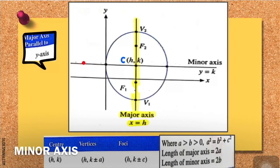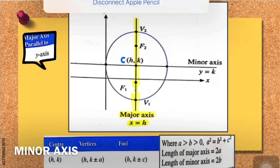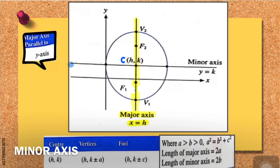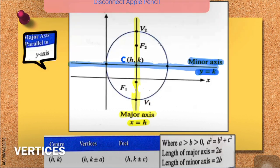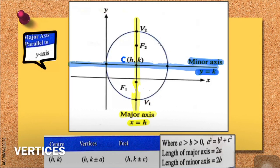This is your major axis with the line x equal to h. The perpendicular line from the major axis that goes through the center point is actually your minor axis. This is your minor axis with the line y equal to k.